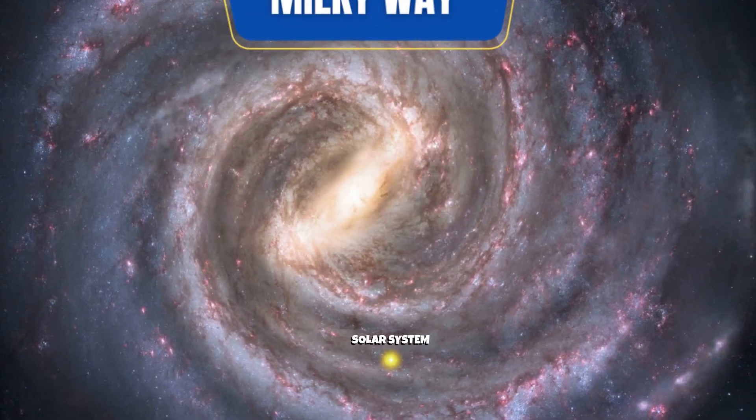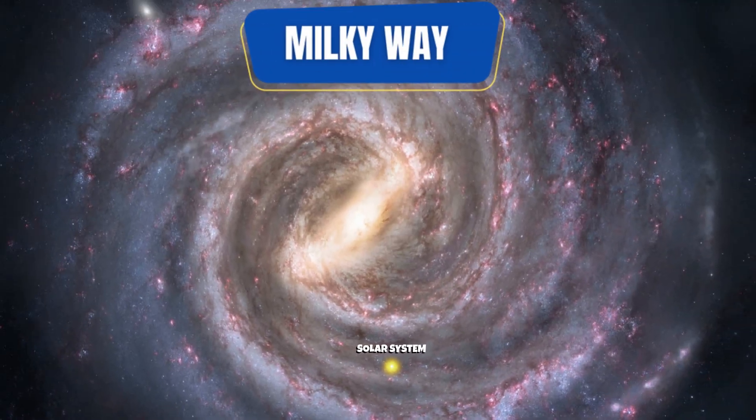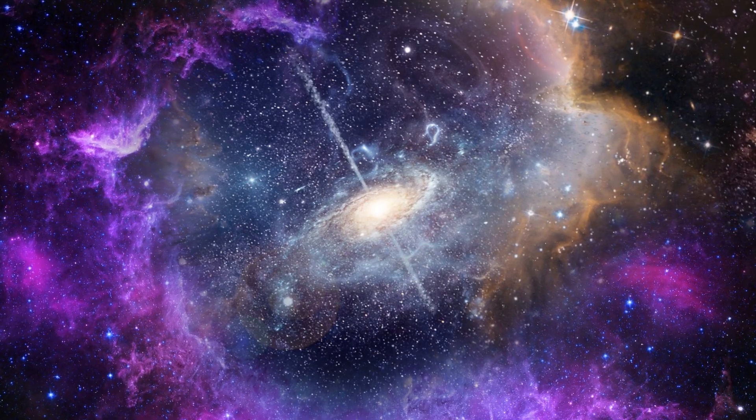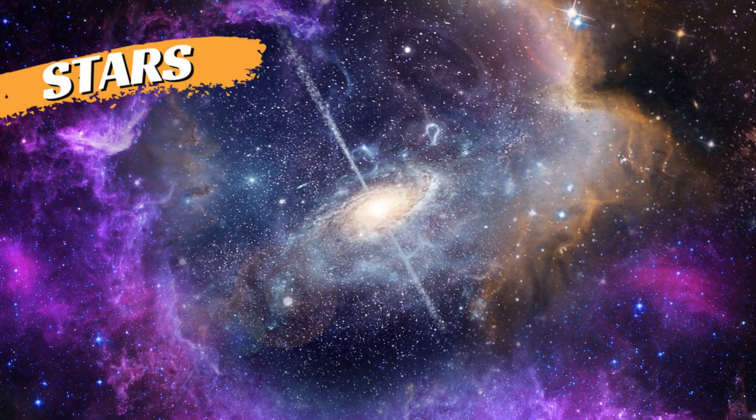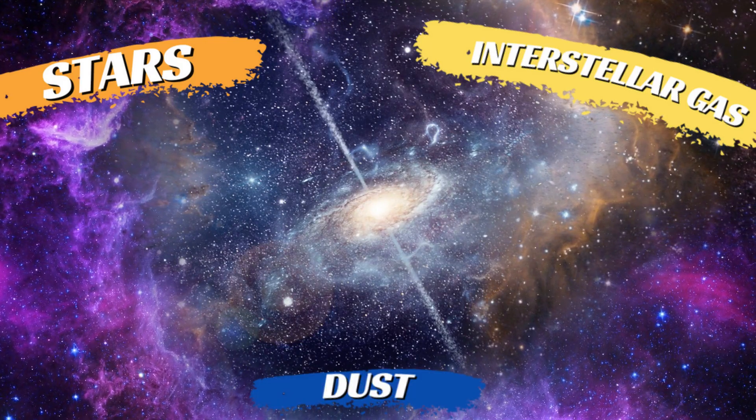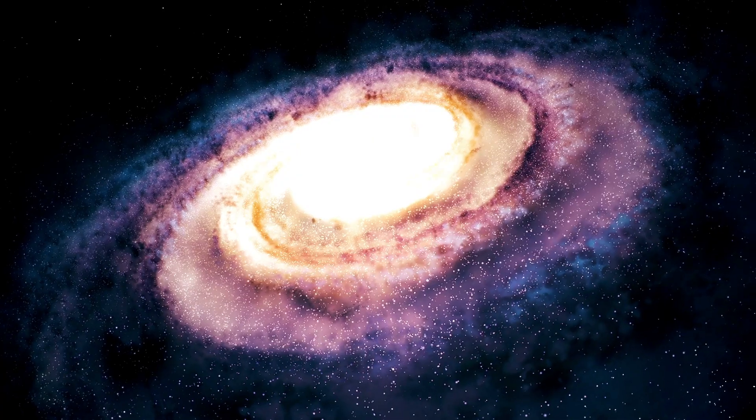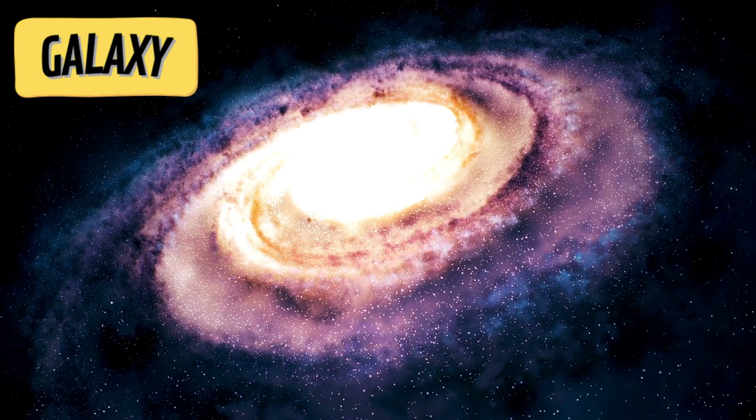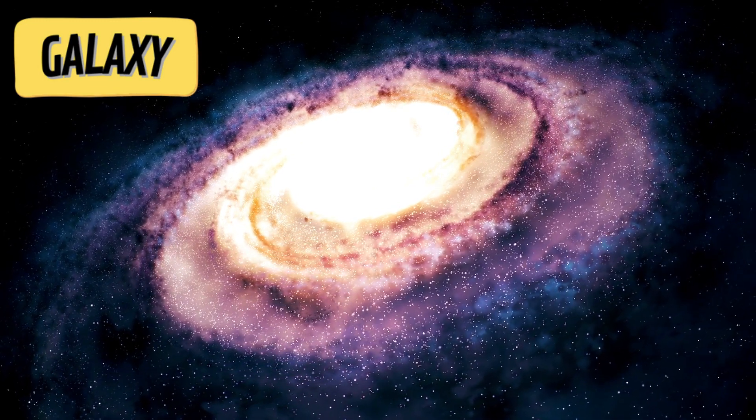Our solar system is at the edge of a galaxy called the Milky Way. A galaxy is a huge collection of millions or even billions of stars, interstellar gas, and dust which are held together by gravity. Just like stars, galaxies come in a variety of different sizes. They also come in different shapes.